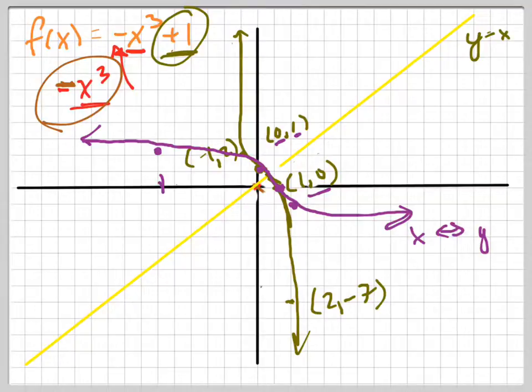Flip them. So, let's analyze this graph again. Look at what I did. I took a couple choice points. 2, negative 7 on the original graph, on f of x. Flip those and it's negative 7, 2. And you can see what happens. This is your graph.